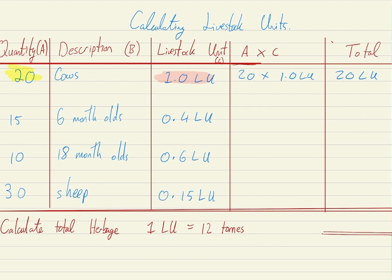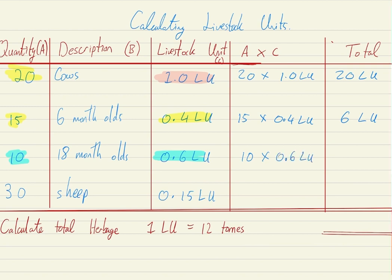For my 15 six-month-olds, I multiply 15 by 0.4 livestock units, which gives me a total of 6 livestock units. For the 18-month-olds, the quantity is 10 and the livestock unit is 0.6, so 10 multiplied by 0.6 gives us a total of 6. Lastly, our 30 sheep multiplied by 0.15 livestock units gives us 4.5 livestock units.